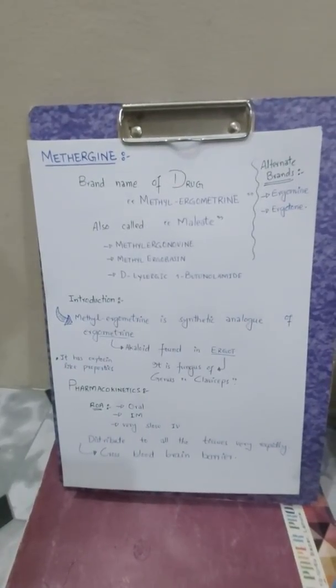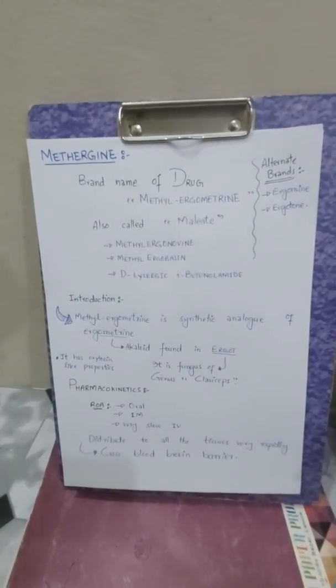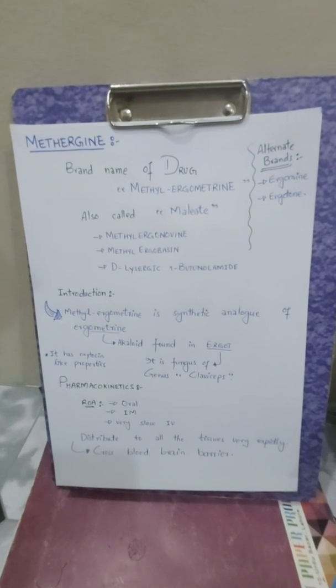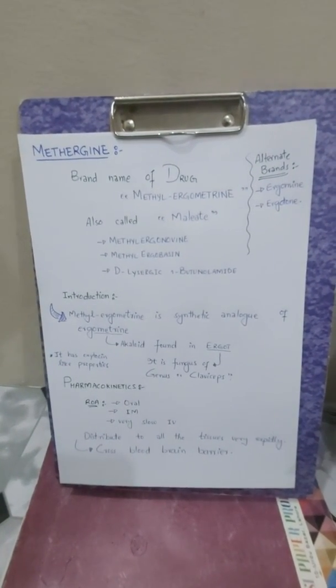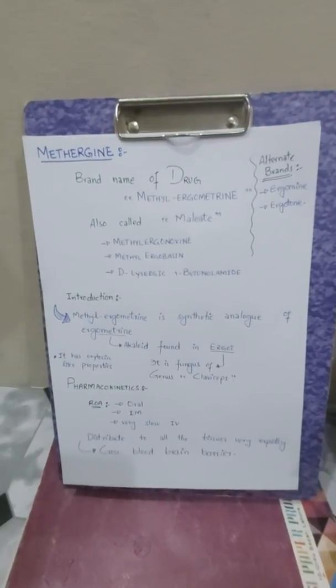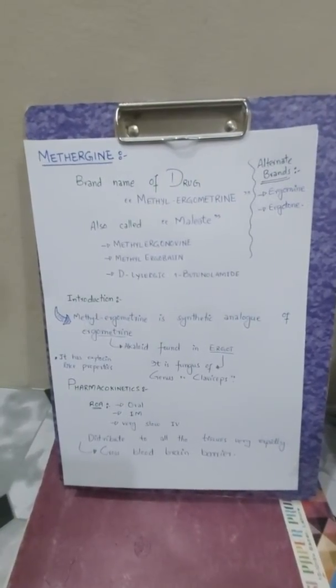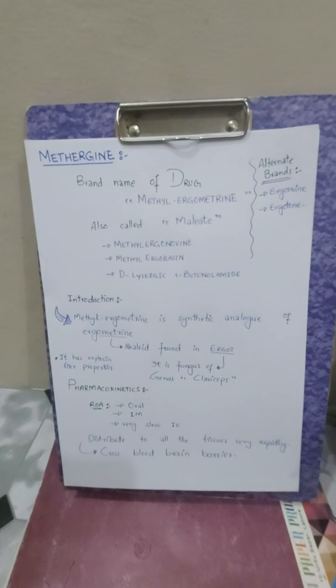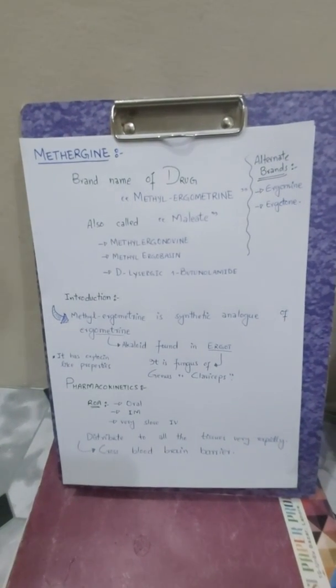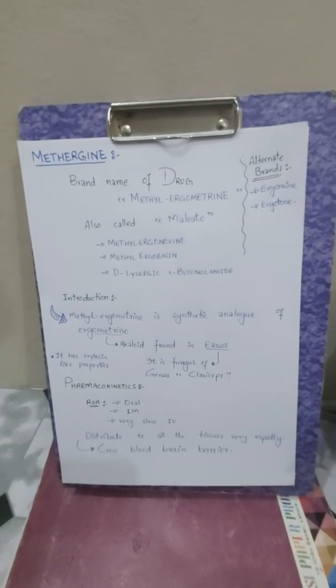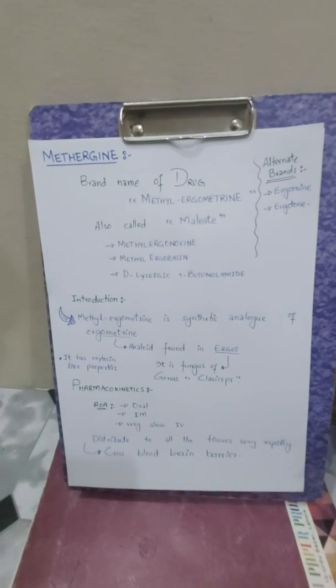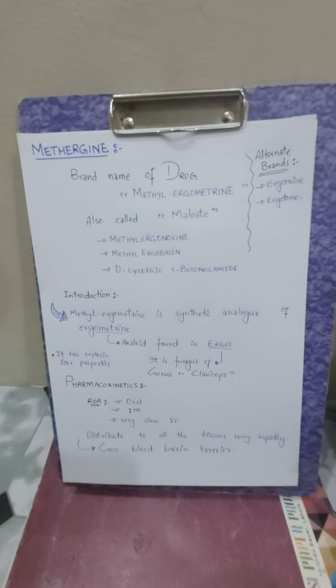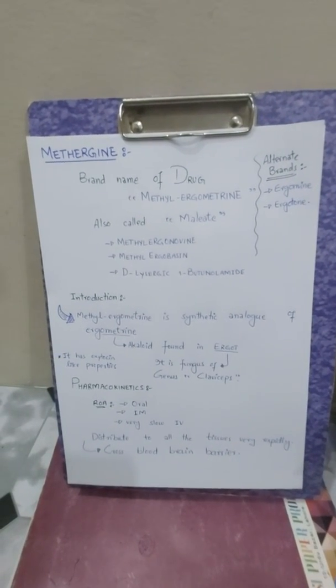The routes of administration of this drug are oral and intramuscular, and if you are giving it IV it should be slow IV, not rapid. This drug distributes to all the tissues very rapidly and effectively, and it can also cross the blood-brain barrier.